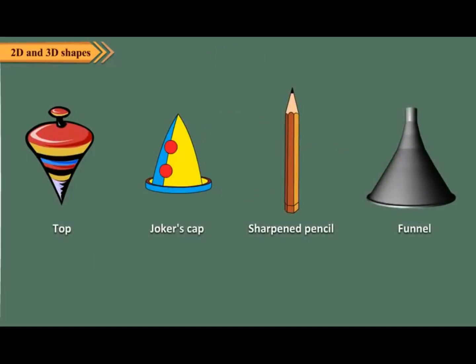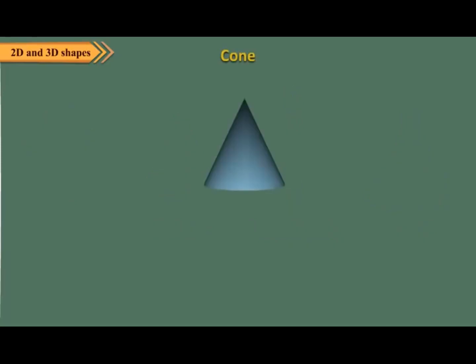Students, now look at these familiar objects. All these objects have the shape of a cone. A cone has one vertex and it has one curved edge. It has two faces: one curved face and one flat face.